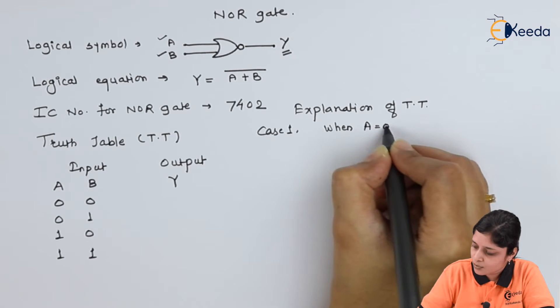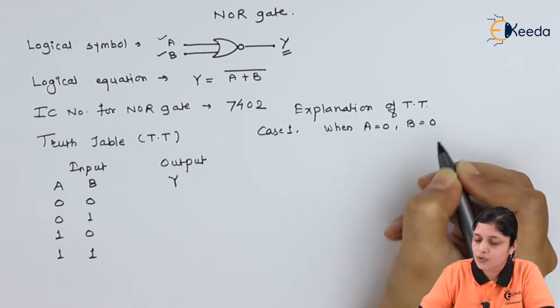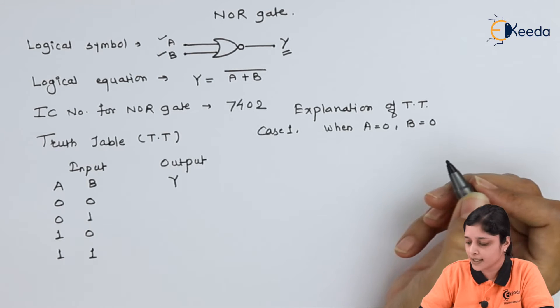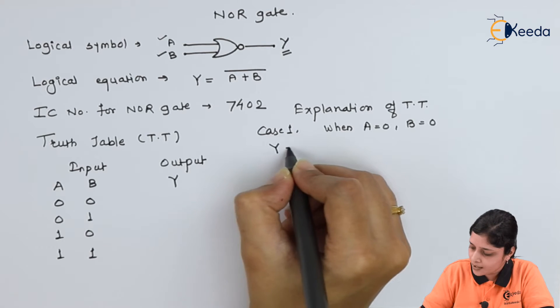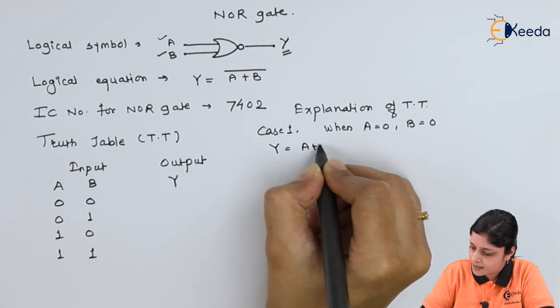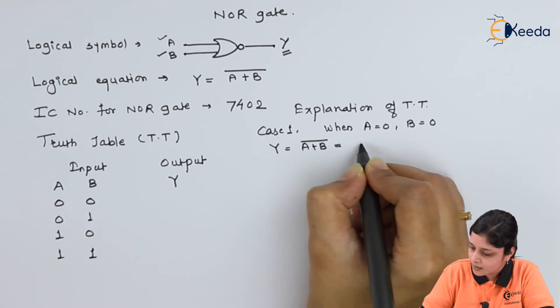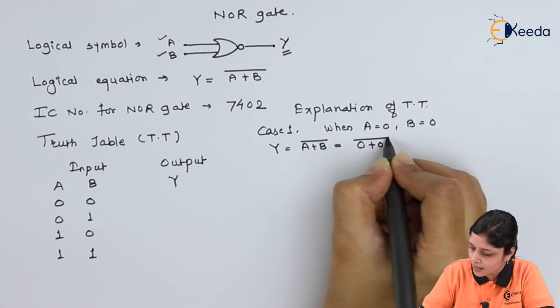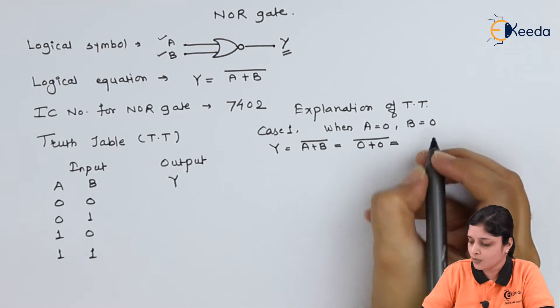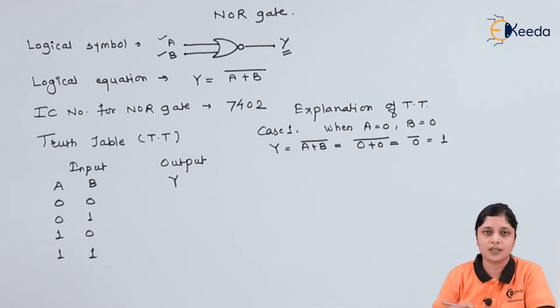When A equals to 0, B equals to 0, what you will get? You have Y equals to A plus B bar, that is 0 plus 0 bar. 0 plus 0 is 0, complement of 0 is 1.